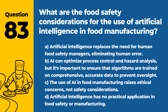Question 83. What are the food safety considerations for the use of artificial intelligence in food manufacturing? a. Artificial intelligence replaces the need for human food safety managers, eliminating human error. b. AI can optimize process control and hazard analysis, but it's important to ensure that algorithms are trained on comprehensive, accurate data to prevent oversight. c. The use of AI in food manufacturing raises ethical concerns, not safety considerations. d. Artificial intelligence has no practical application in food safety or manufacturing. Answer: b. AI can optimize process control and hazard analysis, but it's important to ensure that algorithms are trained on comprehensive, accurate data to prevent oversight. Implementing AI in food safety processes requires careful validation and monitoring.